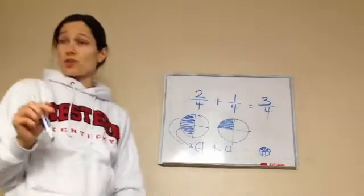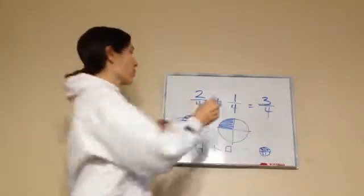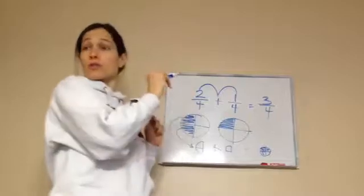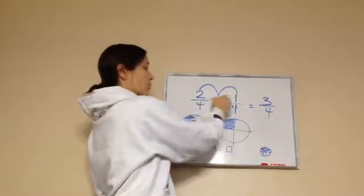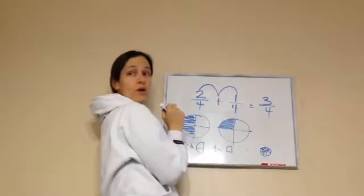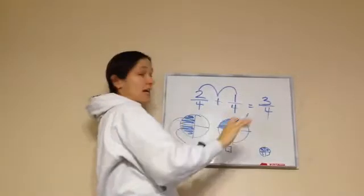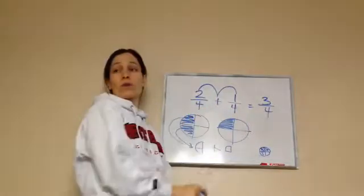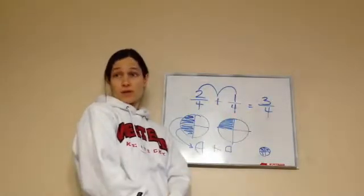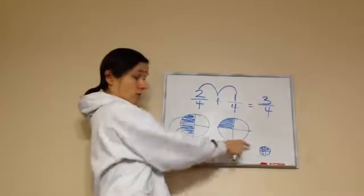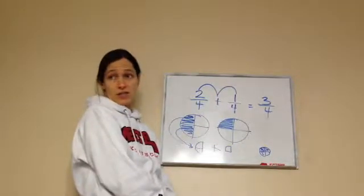But there's an easier way to do it other than having to draw pictures. What I want you to see is you only have to add the numerators. Two plus one is three. And what happens to the four? It stays. It stays the same. Now, a lot of people make the error of adding four plus four and getting eight right here. And can you see how that would be wrong? Three-fourths? It does not equal three-eighths, does it?